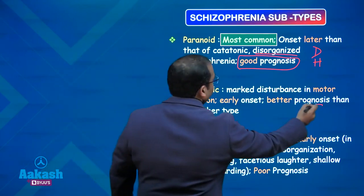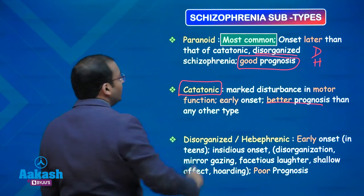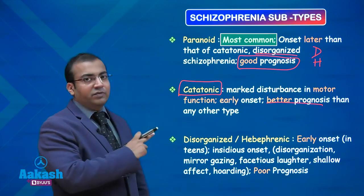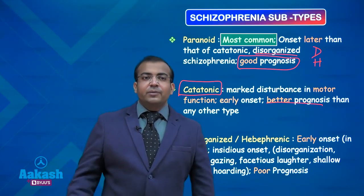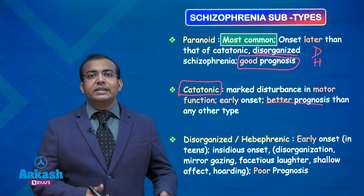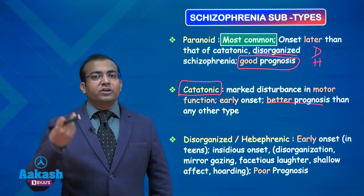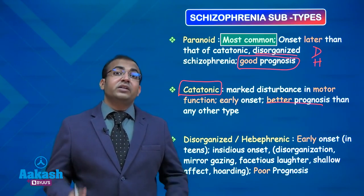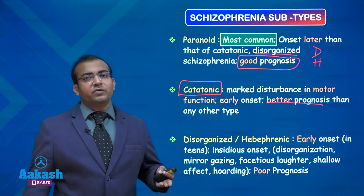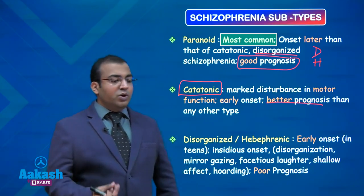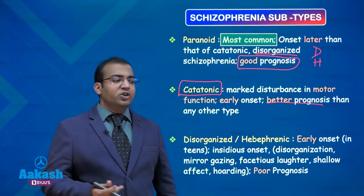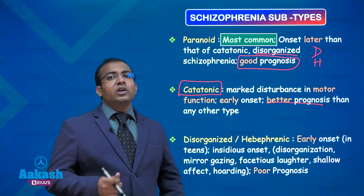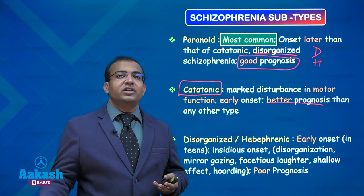Catatonic schizophrenia has the best prognosis of all clinical subtypes. This patient presents with predominant motor dysfunction — rigidity, lack of activity, and abnormal postures. The patient can stand in the sun for hours regardless of heat and sweat, maintaining abnormal postures, such as remaining bent forward for long periods. The patient will also have mutism, stuporousness, and waxy flexibility, where you can mold the person into a specific shape and the patient will maintain that shape for an extended period of time.